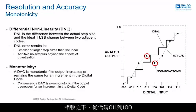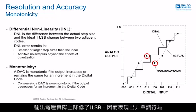Bit 2, by contrast, is 2 LSB low. Instead of increasing by 1 LSB from code 011 to code 100, the output voltage actually decreases by 1 LSB, thereby exhibiting non-monotonic behavior.